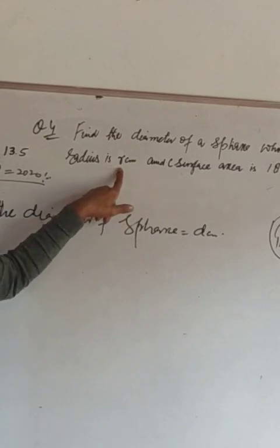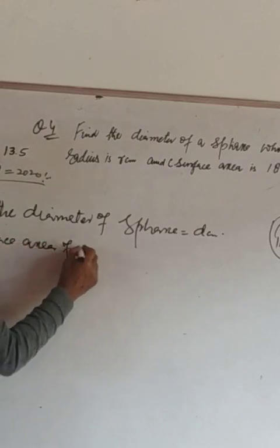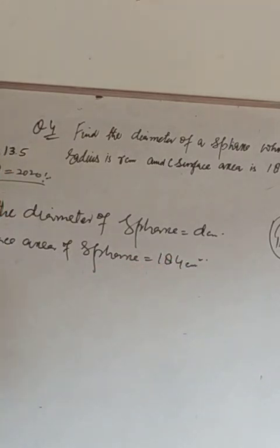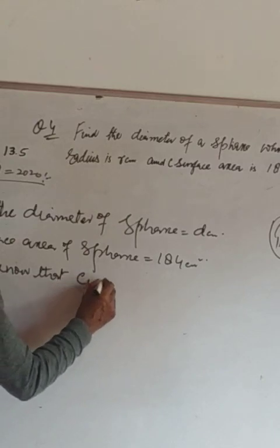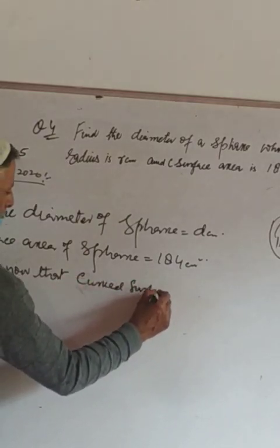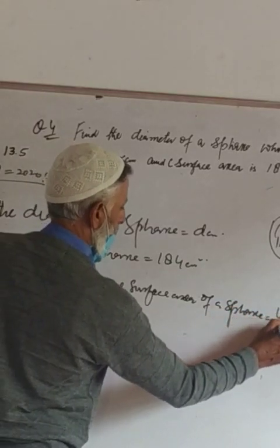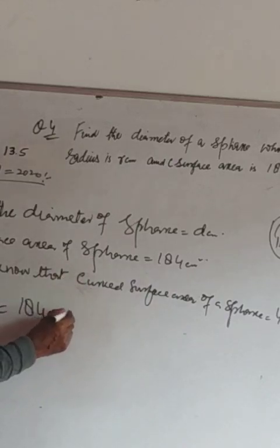First of all, the curved surface area of a sphere is 4πr². Therefore, 4πr² is equal to 184 cm square.